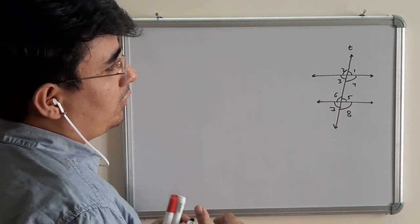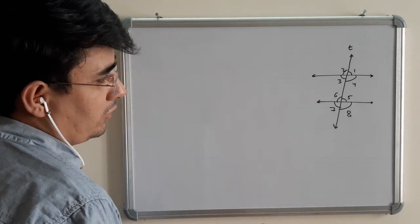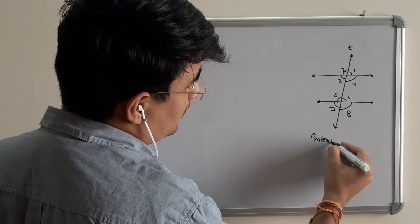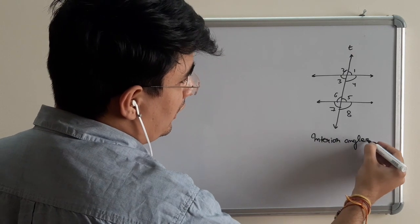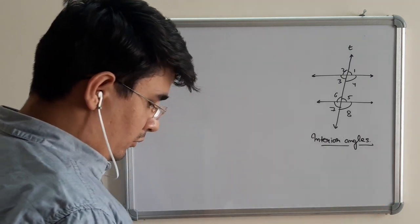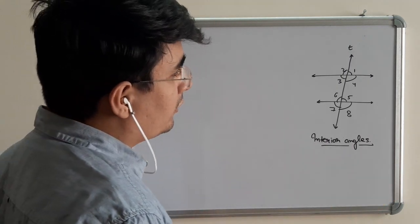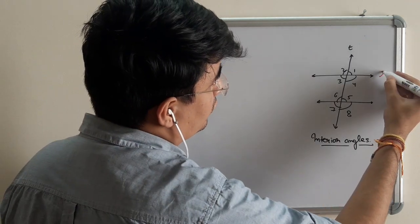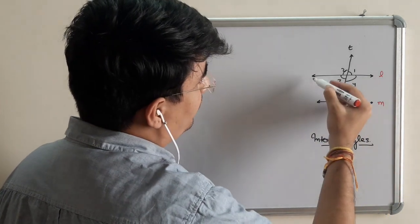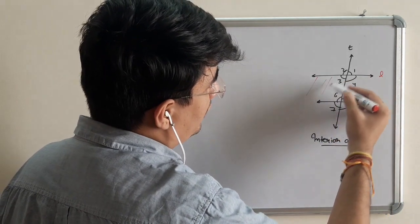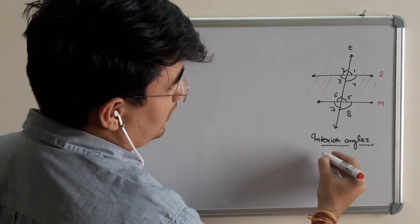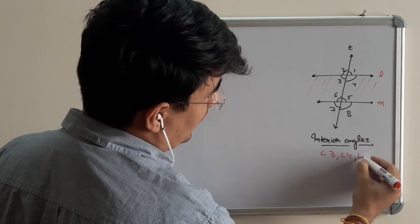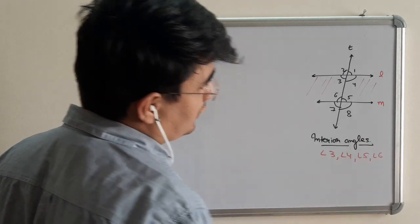Now there are multiple ways of looking at it. First thing which is important is interior angles. When we talk about interior angles, it means that they are between these two lines. Suppose line N and line M. They are in between these two lines. Now you can see them very clearly. Interior angles are angle 3, angle 4, angle 5, and angle 6.